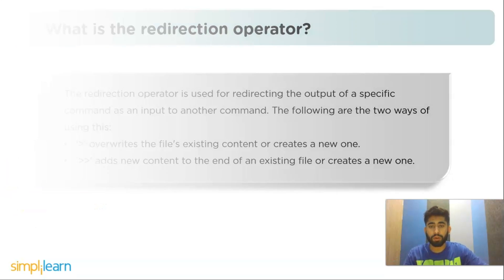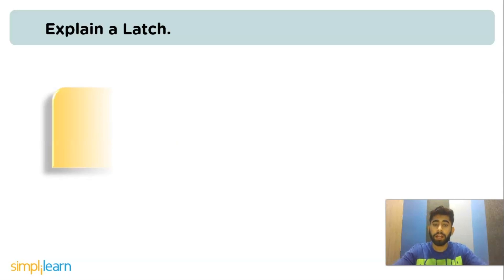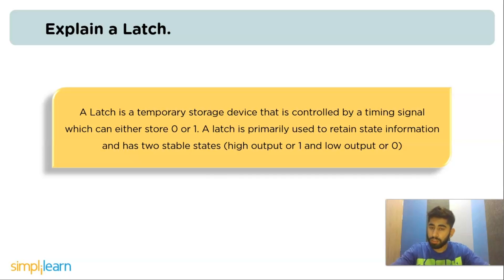The next question is: explain a latch. A latch is a temporary storage device that is controlled by a triggering signal, which can store either zero or one. A latch is primarily used to retain state information and has two stable states: high output (1) or low output (0). As long as a latch is powered on, it can store one piece of data.